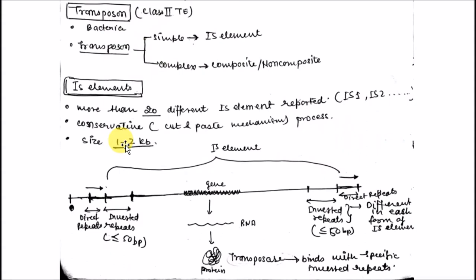Class 2 transposable elements can be divided into 3 parts and can be found either in viruses, in prokaryotes, or in eukaryotes. In bacteria, the transposable elements or transposons can be simple or composite. In simple transposable elements there is an IS element, and in complex transposition it can be composite or non-composite.